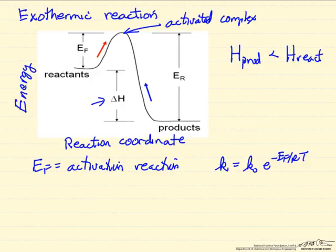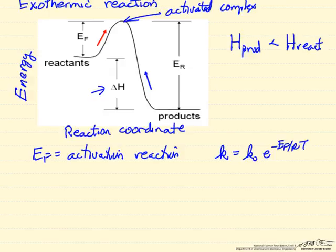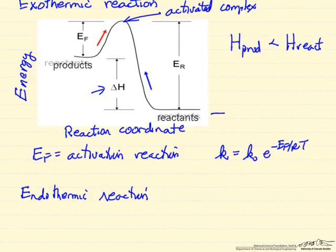Now we should also point out in this diagram that if we had an endothermic reaction, it's just the same diagram but going in the other direction. So if this is my reactant, it's going over a much bigger barrier to get to products, but now the products have a higher energy than reactants.